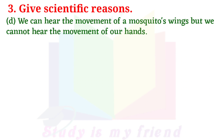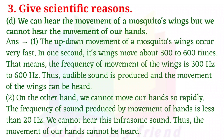D. We can hear the movement of a mosquito's wings but we cannot hear the movement of our hands. Answer: The up-down movements of a mosquito's wings occur very fast — in one second, its wings move about 300 to 600 times. That means the frequency is 300 to 600 hertz, so audible sound is produced and the movement of the wings can be heard. On the other hand, we cannot move our hands so rapidly. The frequency of sound produced by hand movement is less than 20 hertz, which is infrasonic and cannot be heard.